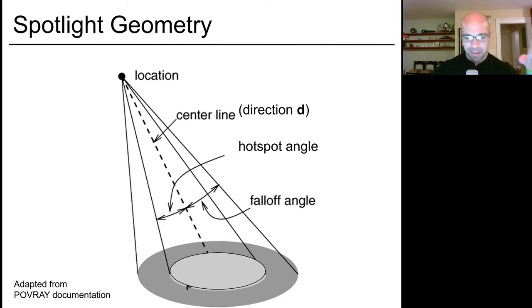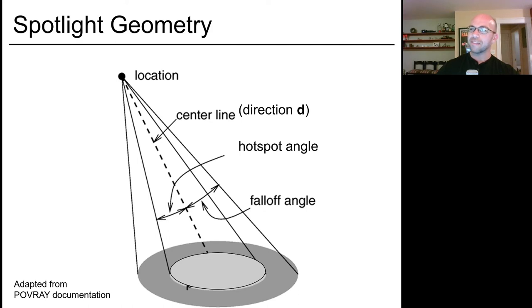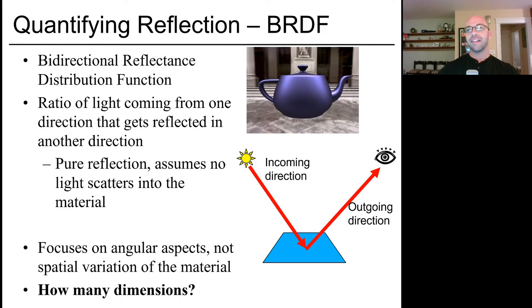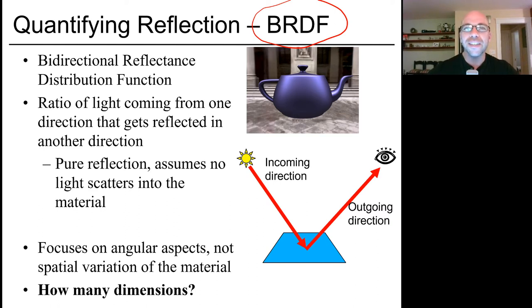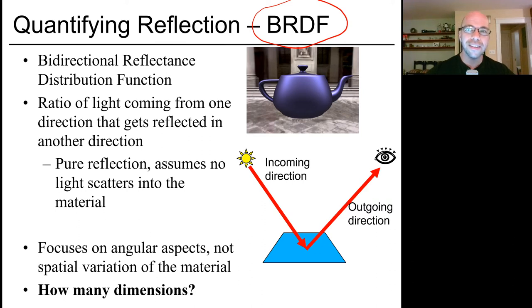Those are the typical parameters that go into spotlight geometry. Now that covers the light coming into a surface — but we have to figure out how much light comes off. In order to do that, we're going to introduce the BRDF, which stands for Bidirectional Reflectance Distribution Function. Graphics people love their acronyms. The BRDF is going to be the simplest model for quantifying light reflection.